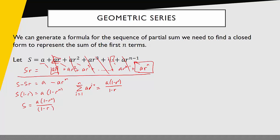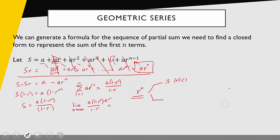What I'm really looking for is the sum of the infinite series, which is the limit of this sequence of partial sums as n goes to infinity. To determine convergence, I'm really just looking at what happens to the r to the n term. If the absolute value of r is less than 1 — say r equals 1 half — then 1 half times 1 half times 1 half gets smaller and smaller, so the limit as n goes to infinity of r to the n equals 0.